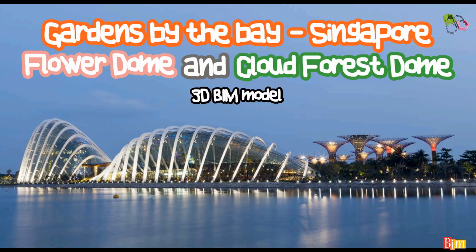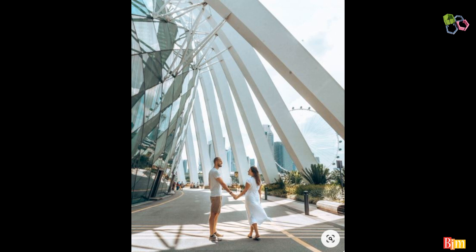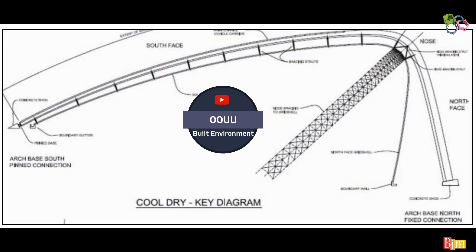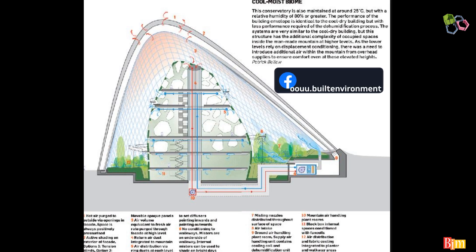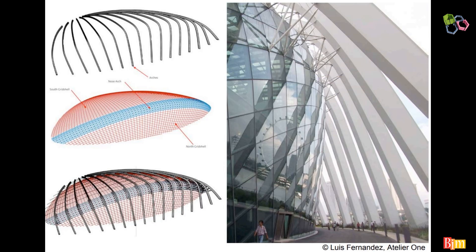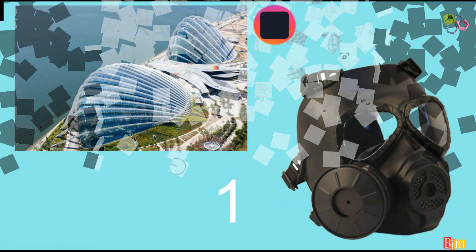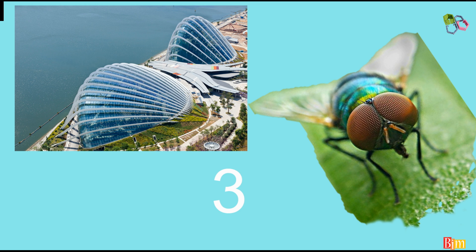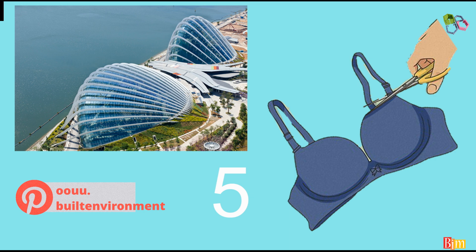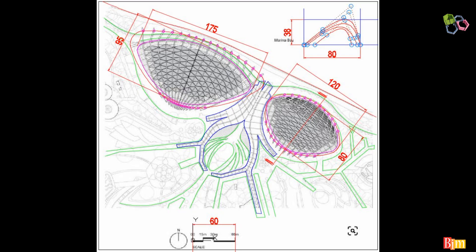Good day everyone, welcome back. This time let's model Singapore's Gardens by the Bay — the Flower Dome and the Cloud Forest Dome. Here are some images and technical details. The Flower Dome is 170 meters by 86 meters and 35 meters in height. The Cloud Forest Dome is smaller in plan at 118 meters by 77 meters, but much taller at 54 meters height.